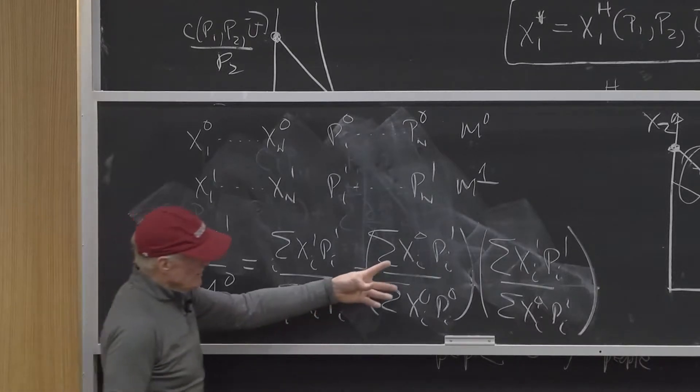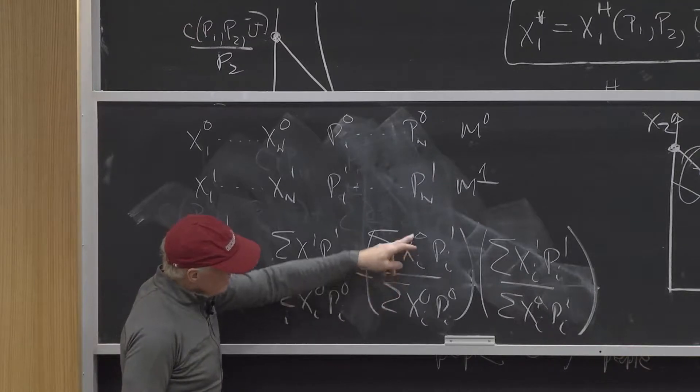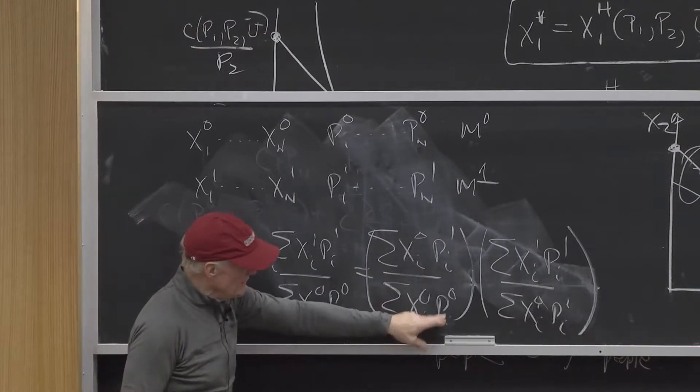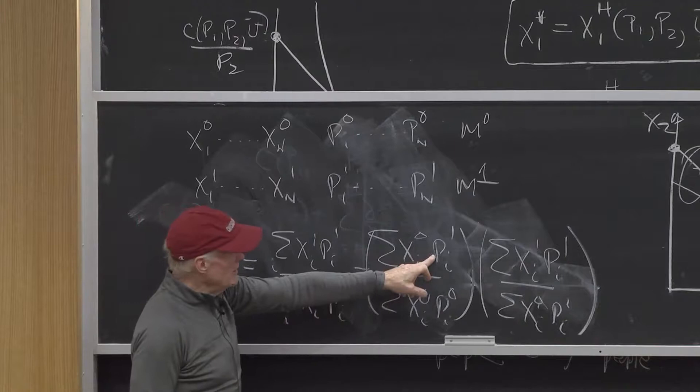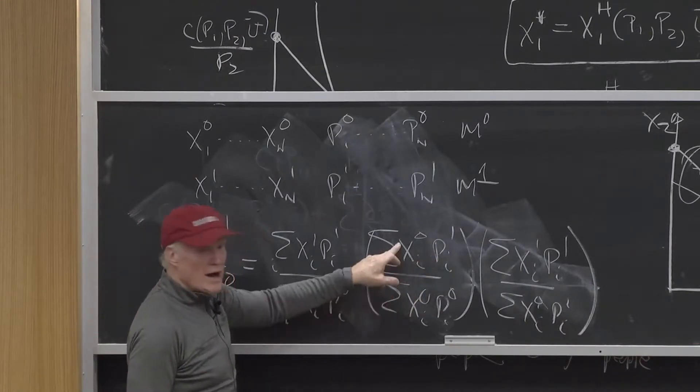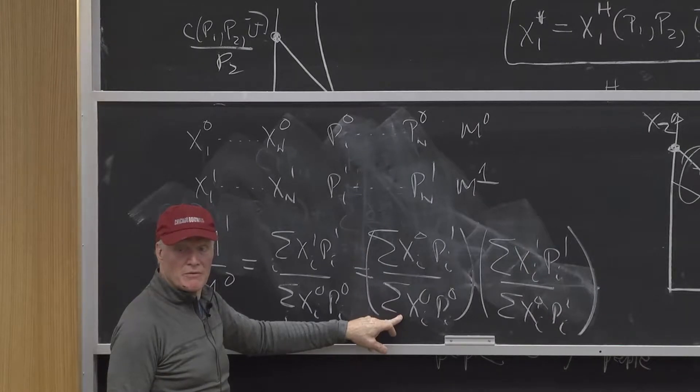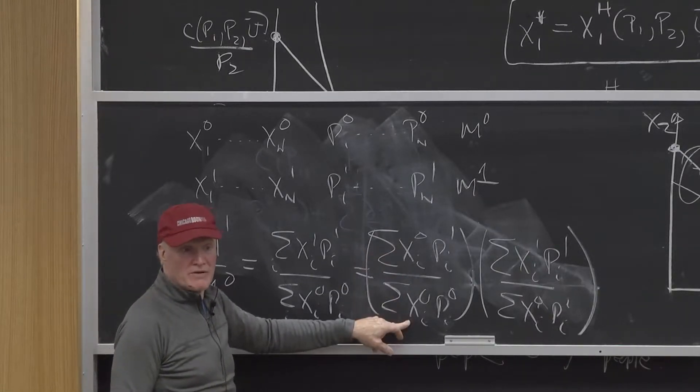Well, what is this? What is the sum of xi naught, p1, divided by the sum of xi naught, p1? That's asking the question, how much would it cost in period 1 to buy what I bought in period 0 compared to how much it cost in period 0. The classic, what we call the Laspeyres price index.